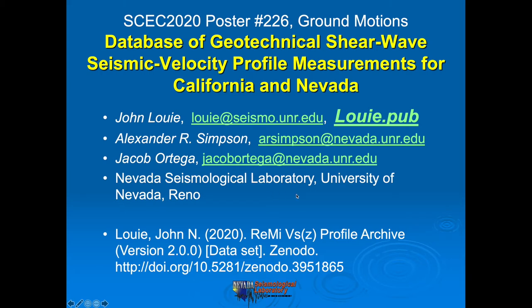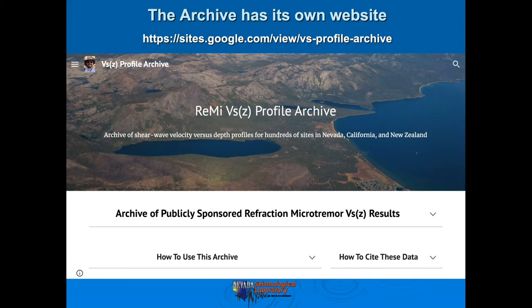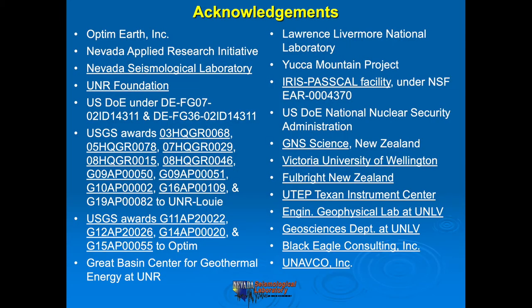There is a DOI for this data set, but you can get to it through louie.pub. Its own website is here and you can scroll down. I've got to acknowledge the help from all the different agencies, companies, and labs that have helped with all these measurements — hundreds and hundreds of shear velocity profile measurements. On the website, there's a link from every award number that we've gotten from the USGS to the final report or the paper that we've published as a result of that award.